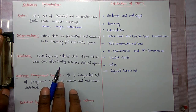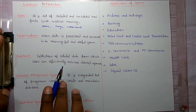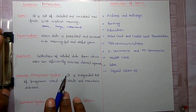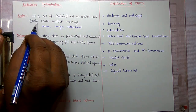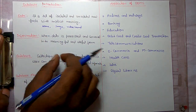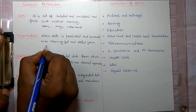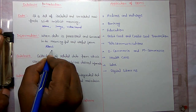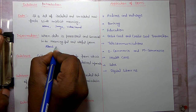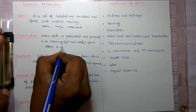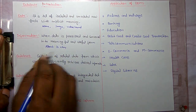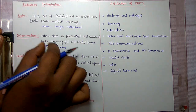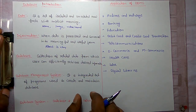Information is when data is processed and converted into meaningful and useful form. For example, Albert is a boy — so it is meaningful information. Where Albert itself is data, and boy is itself data.